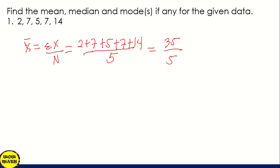So since we're going to check 2 plus 7 is 9 plus 5, 14, plus 7 that is 21, plus 14 that is 35. So 35 divide 5, the answer is 7.